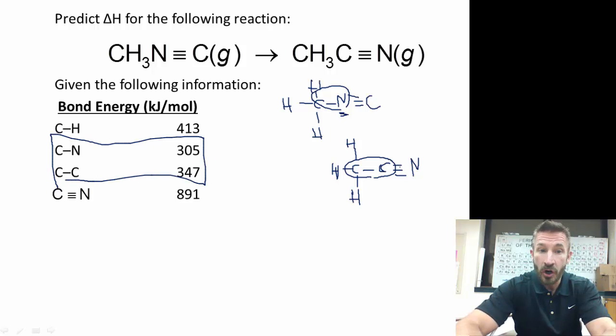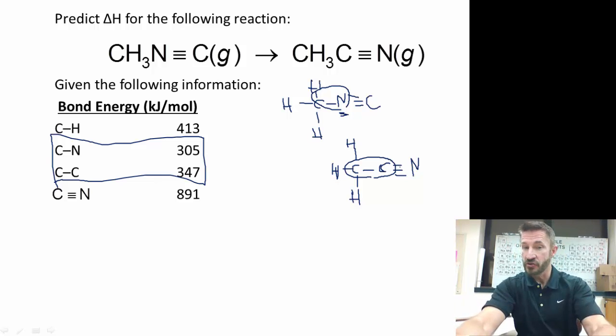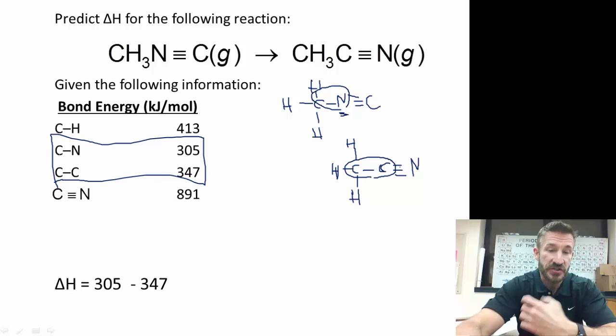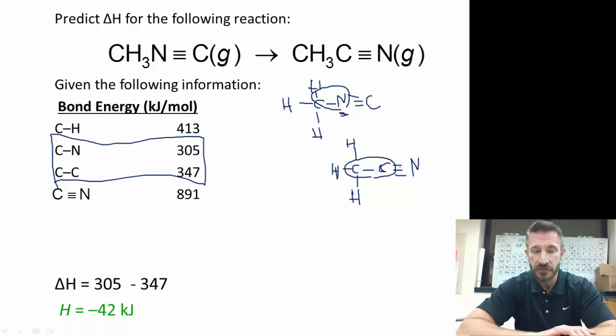You can include the carbon-nitrogen bond and the carbon-hydrogen bond, but they're going to cancel out. Because if you say that you break those, you're going to have to form them again on the other side. So the easiest way to do this is just say the delta H is 305 minus 347, and so it's minus 42 kilojoules. That's it.